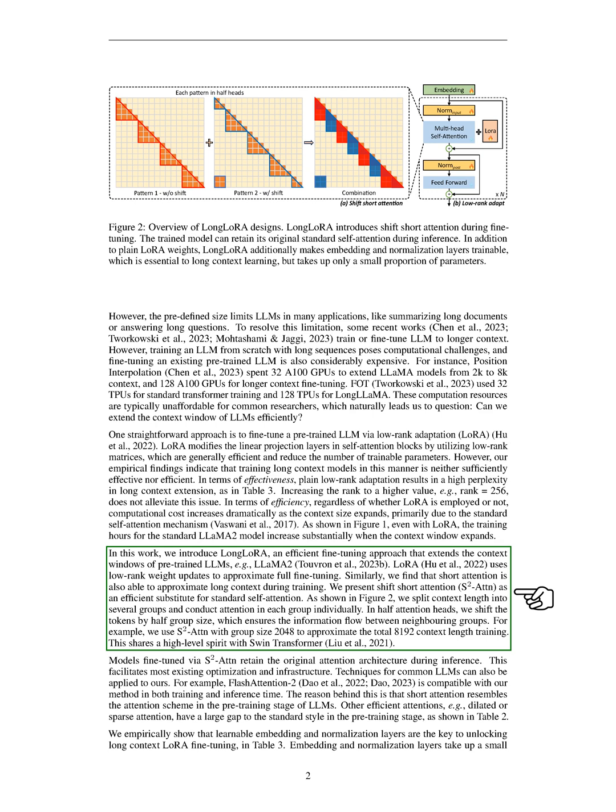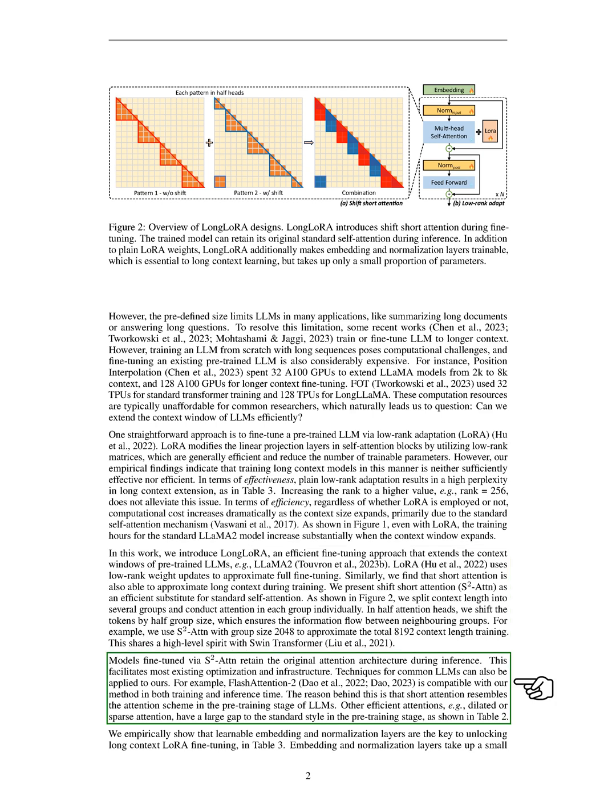This technique splits the context length into several groups and conducts attention in each group individually. For example, we use S²ATTN with a group size of 2048 to approximate the total context length of 8192 during training. This approach is similar to the SWIN transformer method. Models fine-tuned using S²ATTN retain their original architecture during inference.